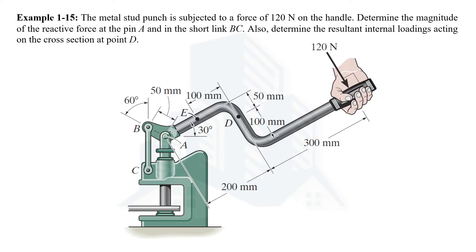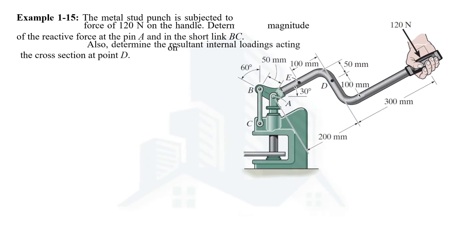Hello everyone. In this video we are going to solve an example related to the resultant internal loadings acting on this metal stud punch. This example is taken from the chapter of Stress in the book Mechanics of Materials by R.C. Hibbeler, and this example number is 1-5. So let's solve this example.